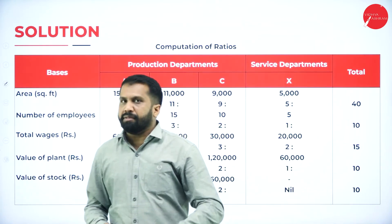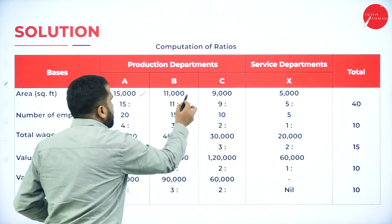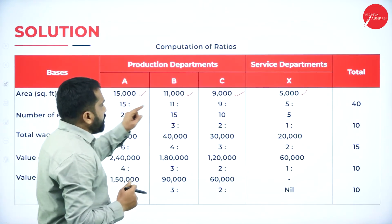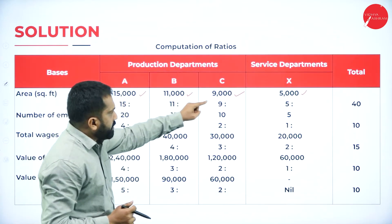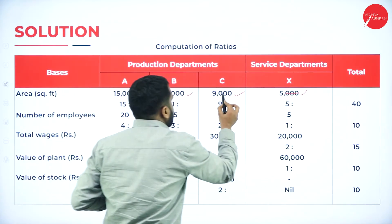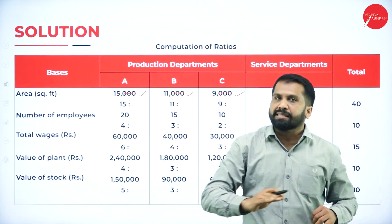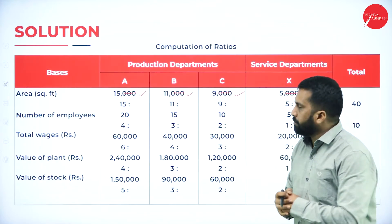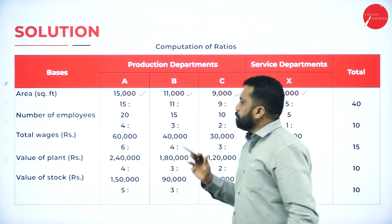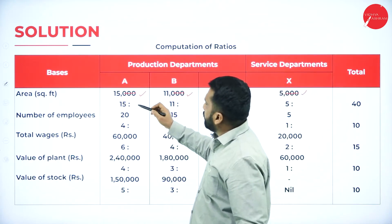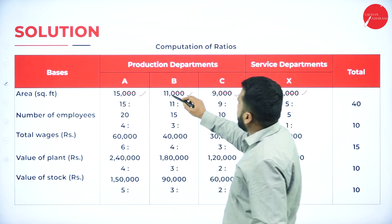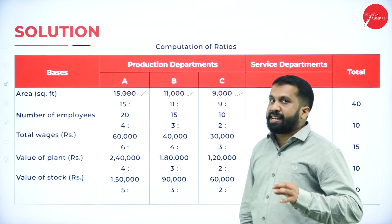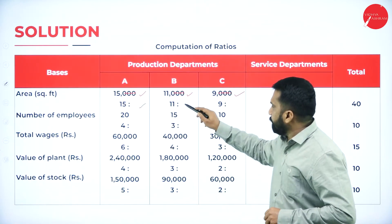Now, we will simplify one by one. You have 15,000; 11,000; 9,000; 5,000. Just follow the zeros — everywhere we have 3 zeros, you can cancel them. After cancellation you have 15, 11, 9, 5. Can you simplify further? No — because 5, 9, 11, 15 cannot be divided by a single common table. So this will be the final answer: 15:11:9:5.